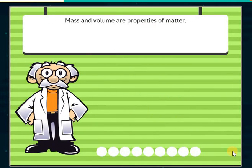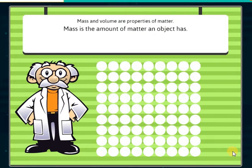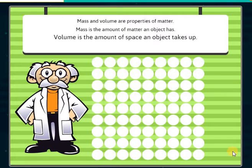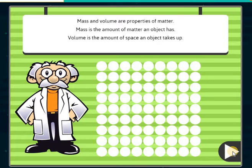Mass and volume are properties of matter. Mass is the amount of matter an object has. Volume is the amount of space an object takes up.